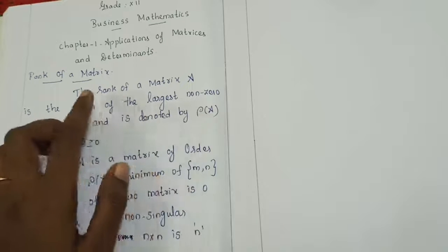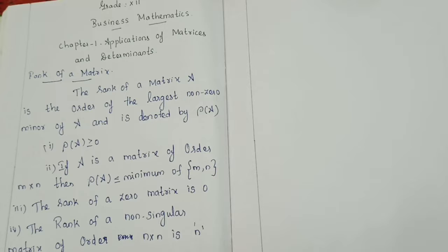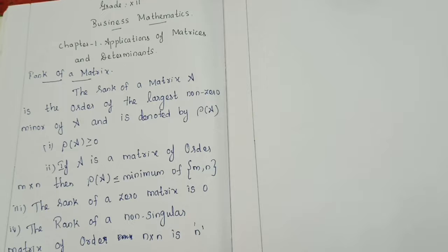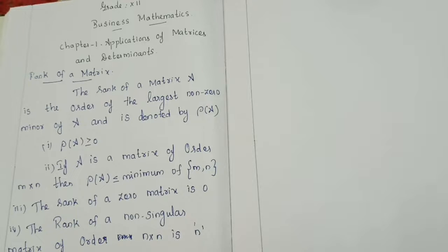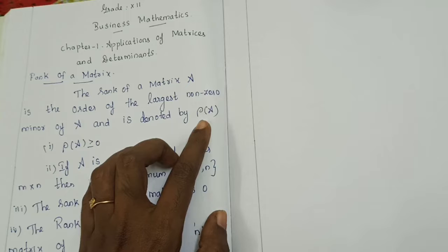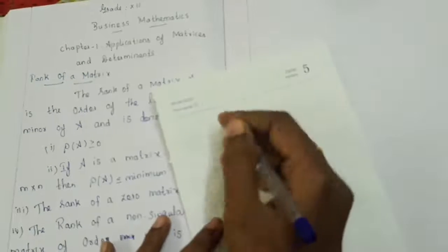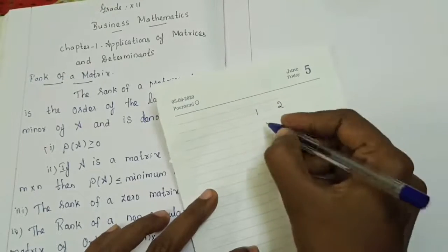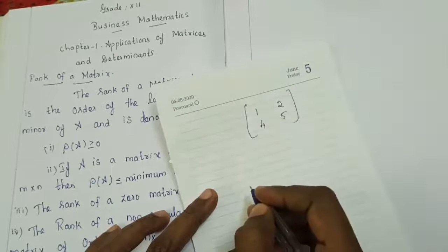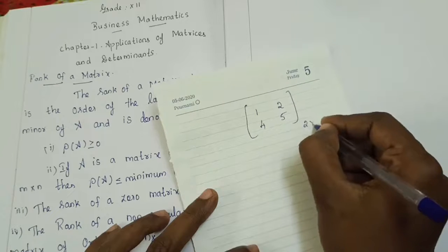I am giving one small example. The definition is: rank of a matrix A is the order of the largest non-zero minor of A, denoted by rho of A. I am taking one matrix: 1, 3, 4, 5. This is a matrix of order 2 cross 2 — 2 rows, 2 columns.